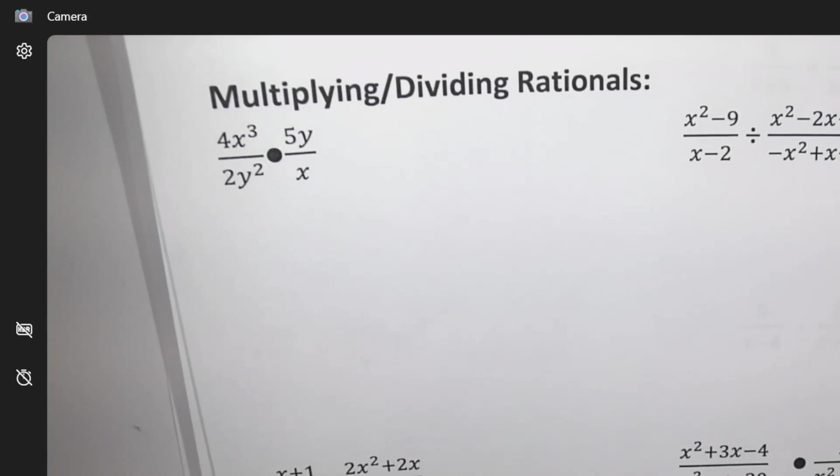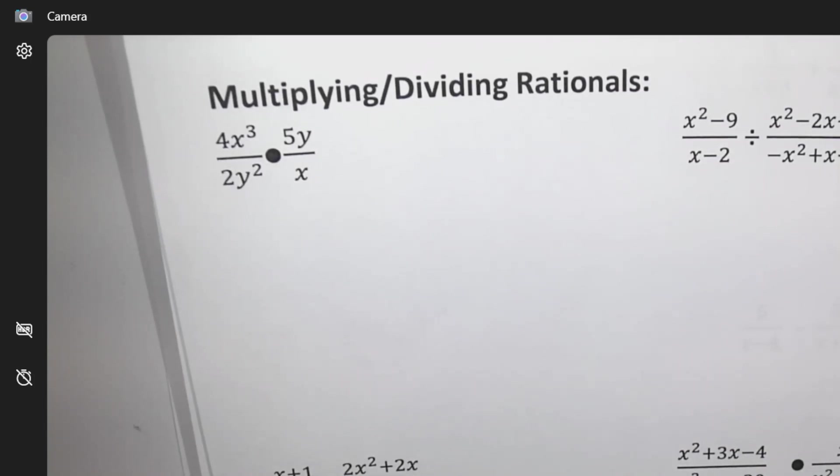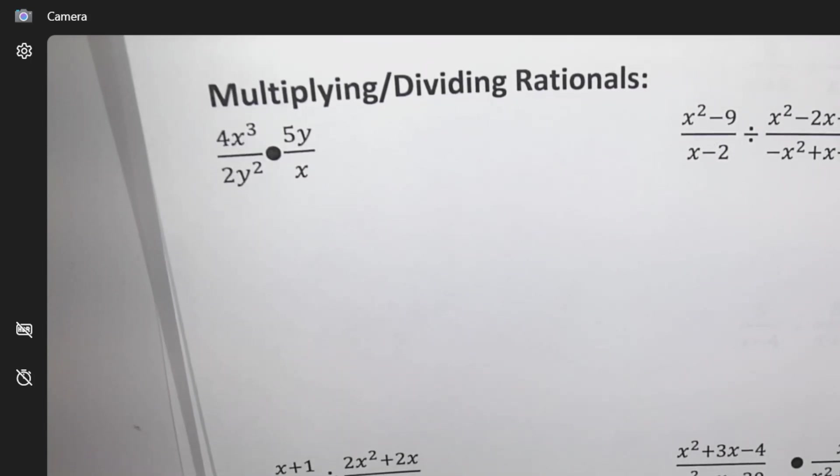Okay, multiplying and dividing rationals. We talked a little bit about just numbers yesterday with multiplying and dividing, but these have variables in them. When you multiply or divide, you're looking for anything that can cancel - multipliers and dividers that can cancel.